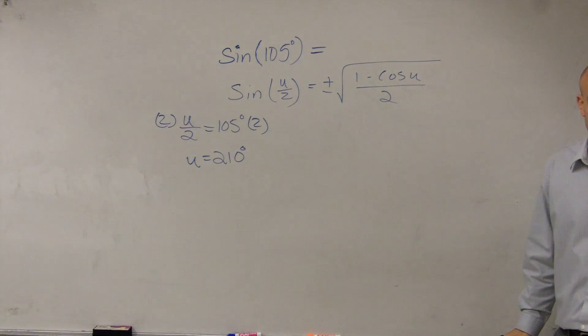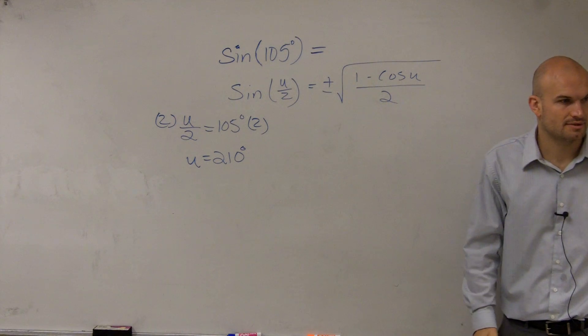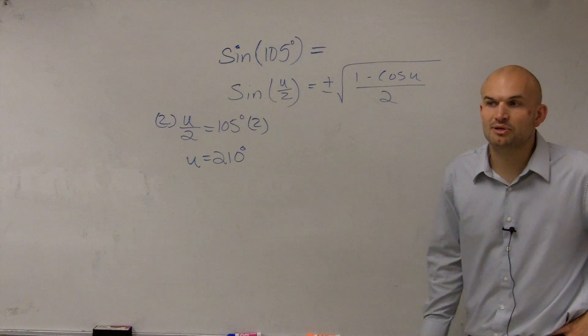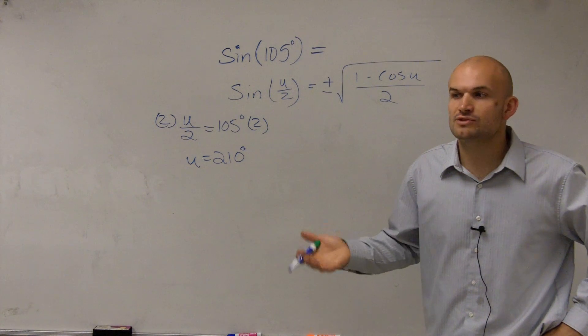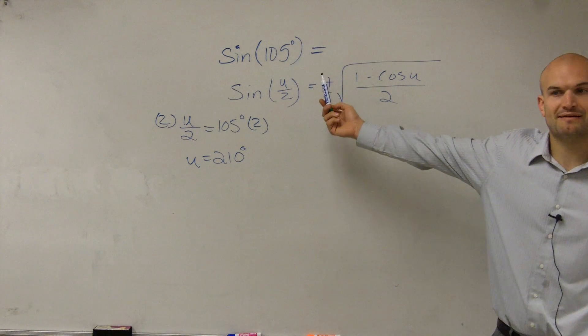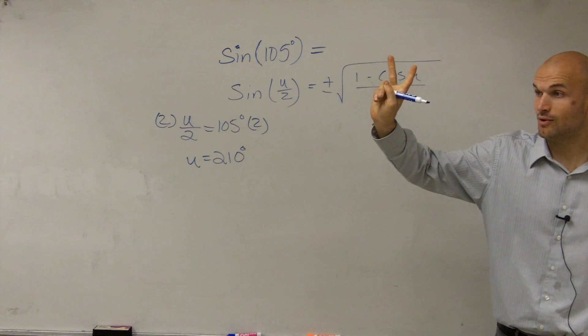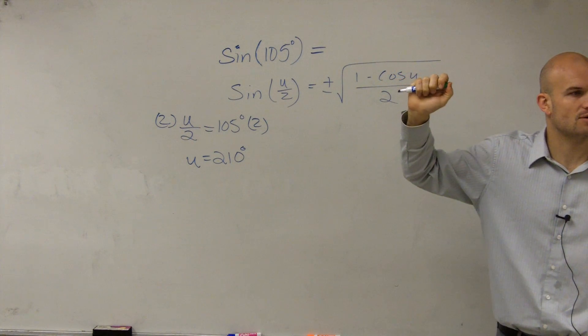Does that kind of make some sense what I did? Now the next thing is you guys notice we have a plus or minus. When using the sine, it's going to be plus or minus, but we're only going to be concerned about using the sine value for which quadrant our angle's in. We notice 105 degrees is going to be in the second quadrant, so therefore sine is going to be positive or negative in the second quadrant.